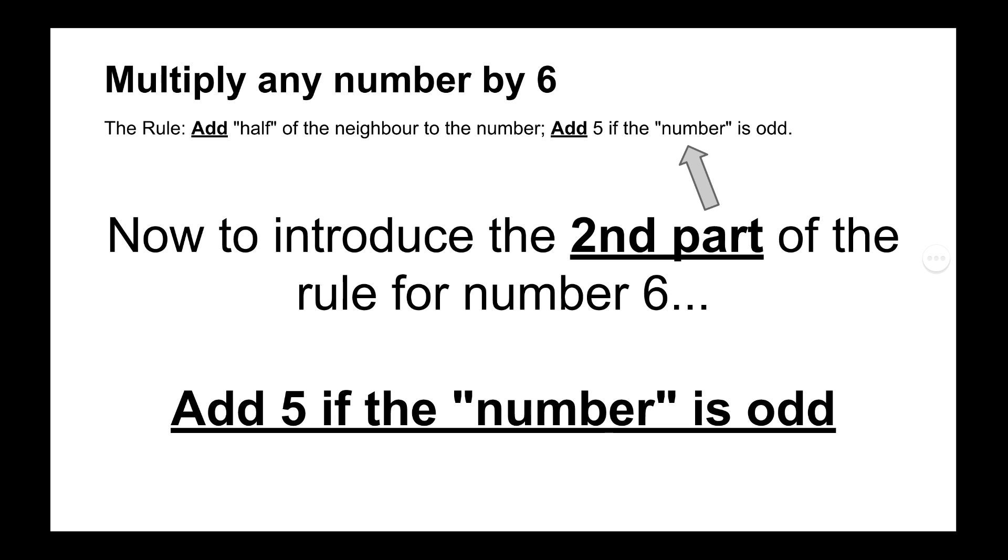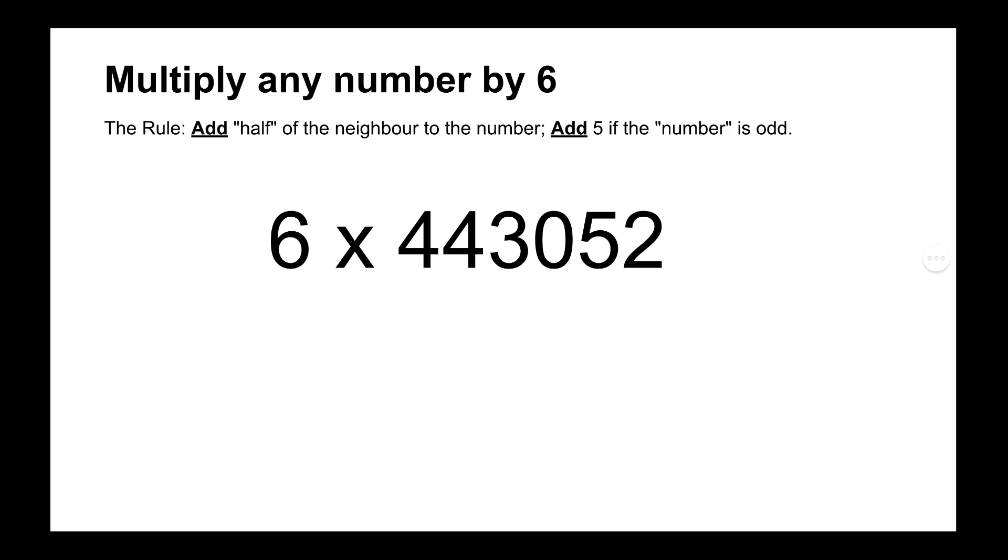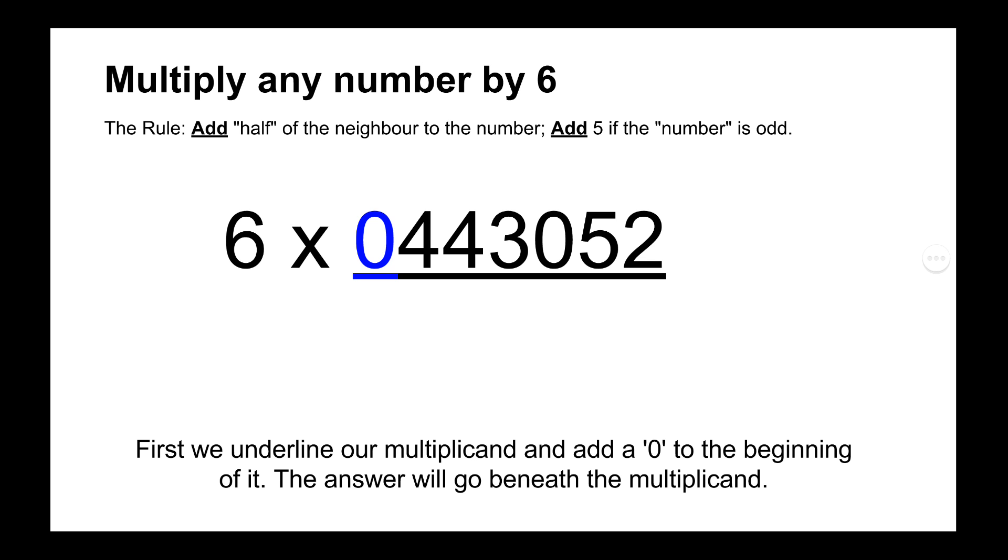So yeah, now to introduce the second part of the rule for number 6. And that is add 5 if the number, the number that we're multiplying, is odd. So 6 times 443,052. So that's got zeros in it, odd numbers, and even numbers in it. So that should be quite an interesting one, which will cover the entirety of the rule for number 6. So as we normally do, we add a zero to the beginning and then underline our multiplicand.